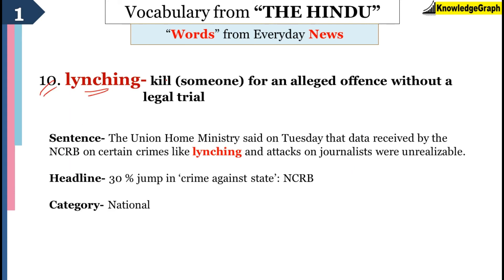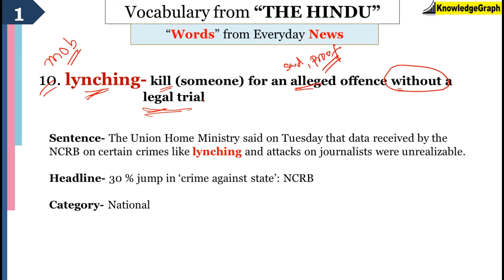The next word is lynching. Lynching is killing someone without a legal trial. A very common phrase used with lynching is mob lynching — that means a group of people who kill someone for an alleged offence. As said, it is claimed but not proven. For example, someone commits a crime and some people assume that this person committed it; they do not go to the police or the judges but instead take revenge themselves and kill that person — that's called lynching. The sentence was: 'The Union Home Ministry said on Tuesday that data received by the NCRB on certain crimes like lynching and attacks on journalists were unreliable.'